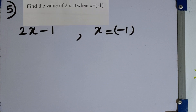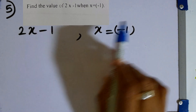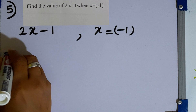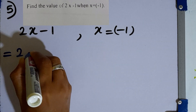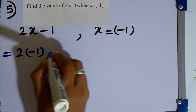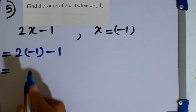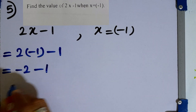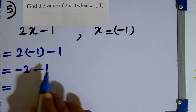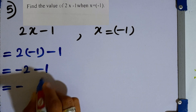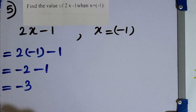Question number 5. Find the value of 2x minus 1 when x equals minus 1. We substitute minus 1 for x: 2 times minus 1 minus 1 equals minus 2 minus 1. This is the addition of two negative numbers, so the magnitudes are added, giving minus 3 as the answer.